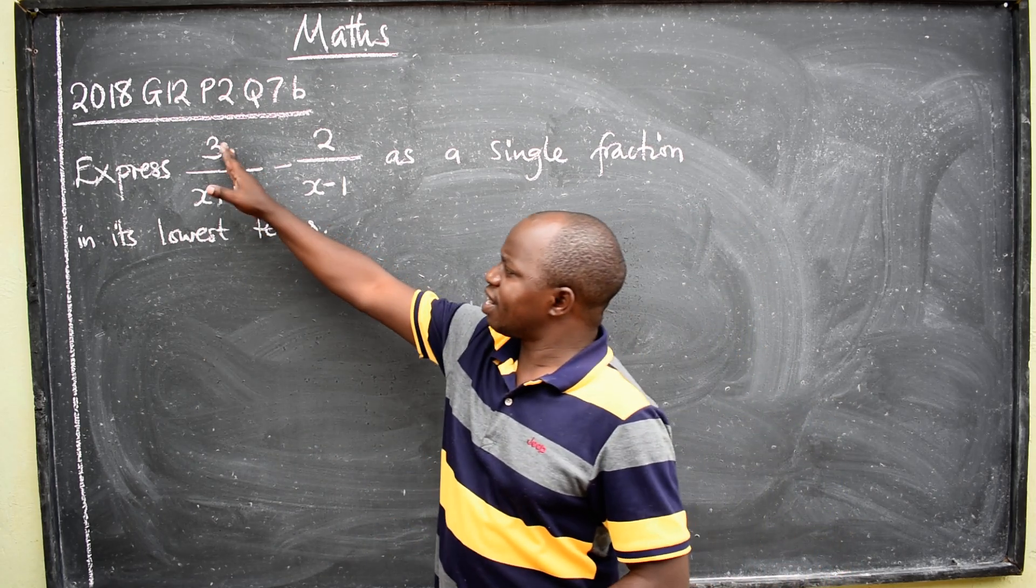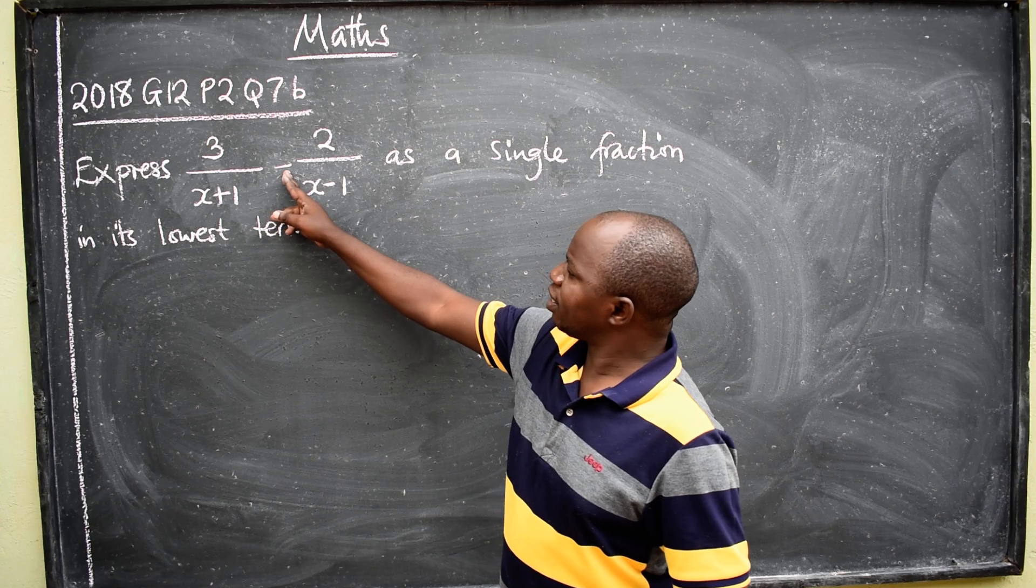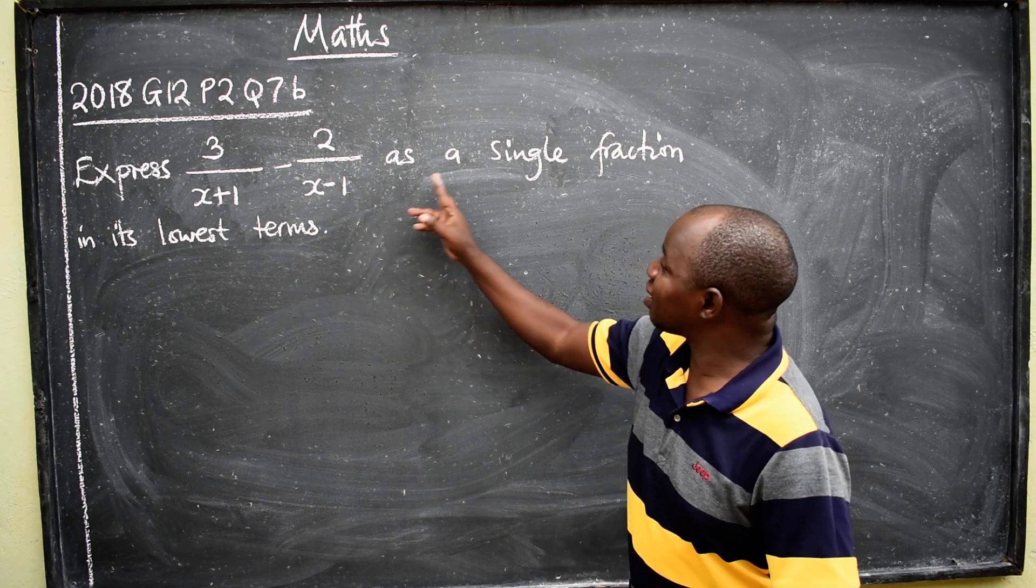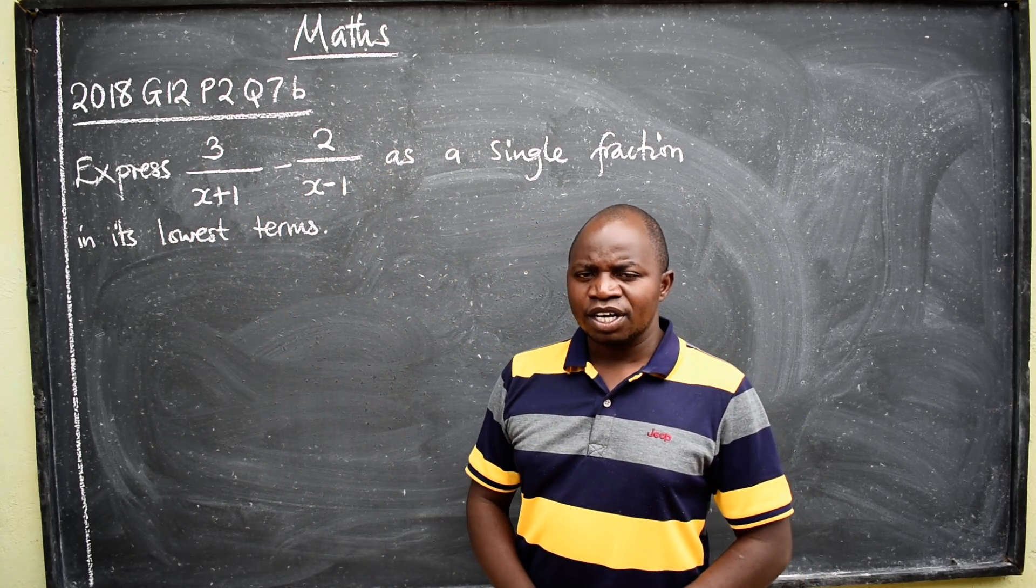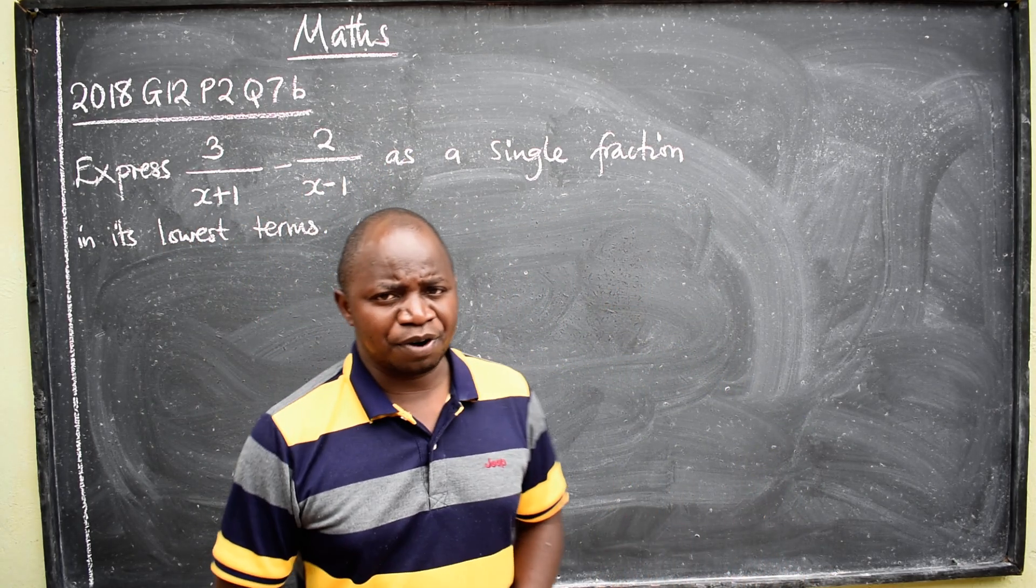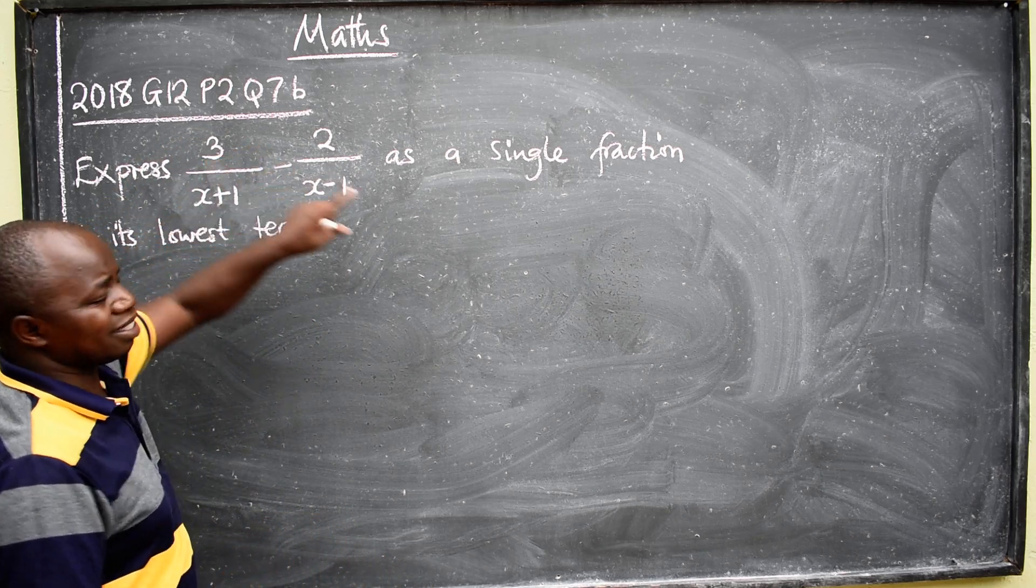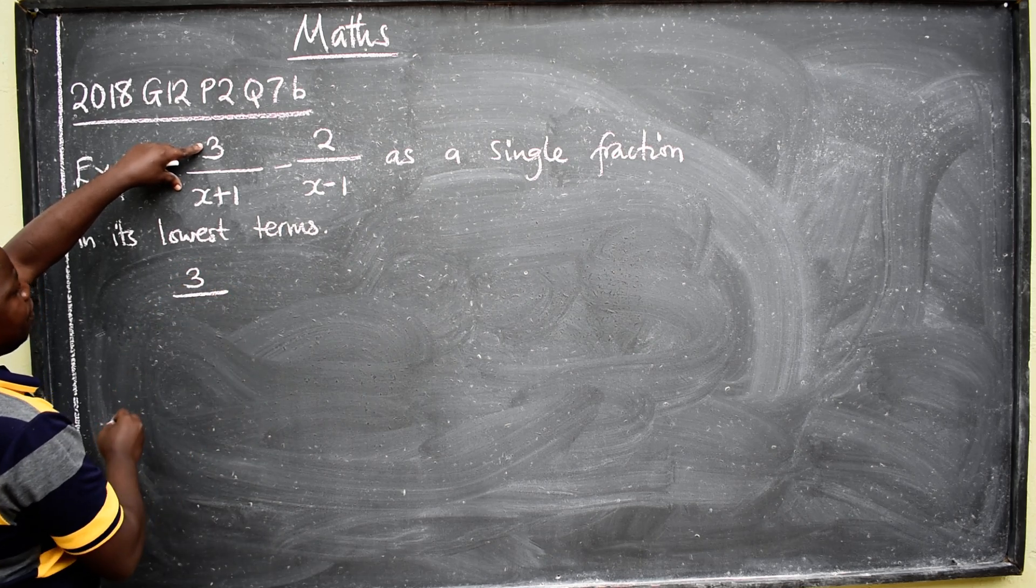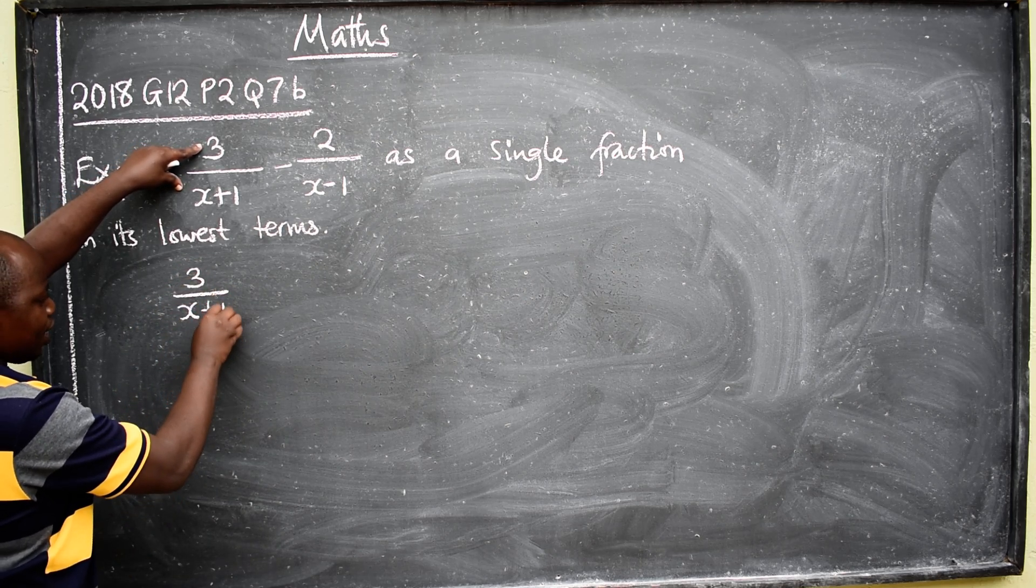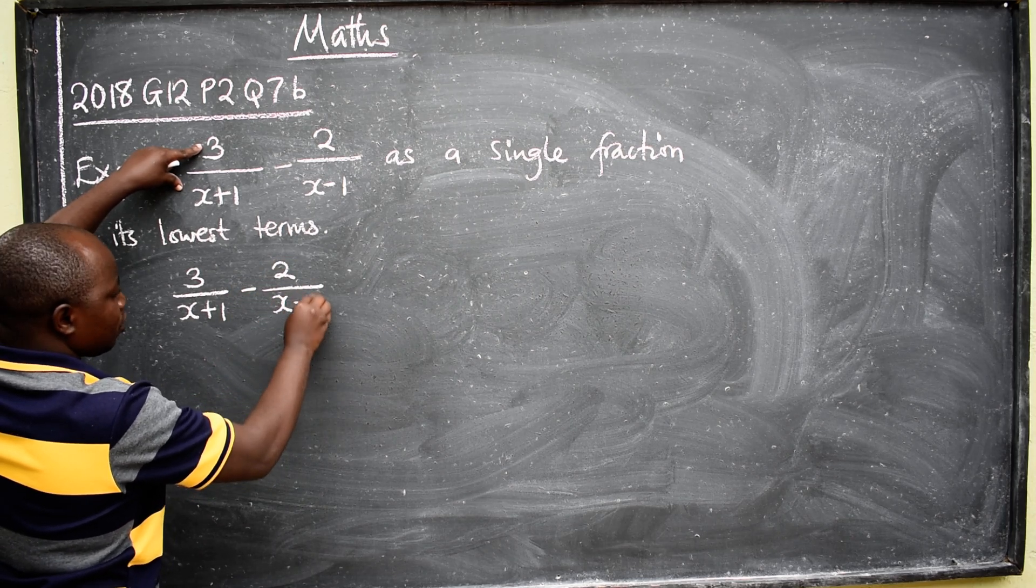Express 3 over x plus 1 minus 2 over x minus 1 as a single fraction in its lowest terms. This is coming from algebra. So we are taught to express this as a single fraction. So all you need to do is to write 3 over x plus 1 minus 2 over x minus 1.